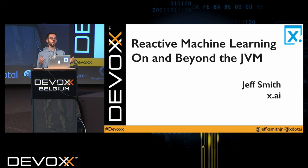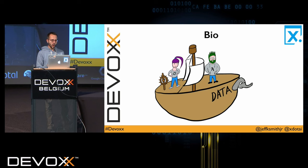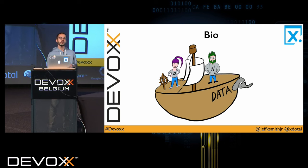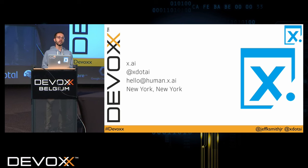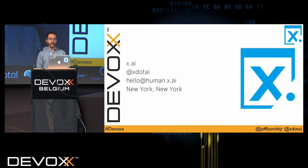A quick intro on me: what I spend most of my time working on is with data scientists and engineers trying to build large-scale machine learning systems. Right now I do this primarily in Scala at x.ai. At x.ai we're an artificial intelligence startup building a personal assistant who operates over emails to schedule meetings for you — just CC her on your emails the same as you would a human personal assistant and she'll take care of all the negotiations around location and schedule.